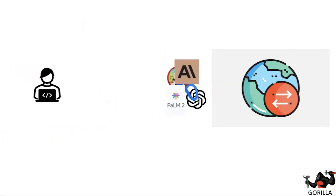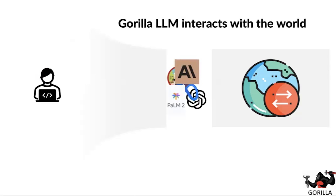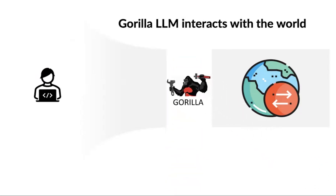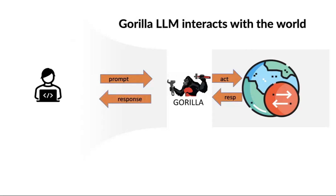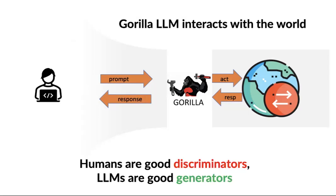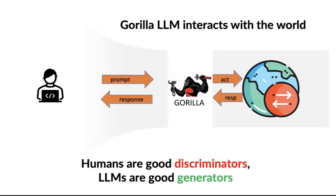Our goal was: can we flip this around? Can we have a scenario where the LLM is the one that performs all the actions? To do that, we train the Gorilla LLM. You prompt the LLM, the LLM performs an action and relays the artifact back to you. This is based on the fundamental belief that humans are good discriminators and LLMs are good generators. If I give you two pieces of cake from two different recipes, you can quickly tell me which one you like better. Similarly, if there's a big SQL database and you want to plot a graph, it's much easier to show you the two graphs and ask which one you like.